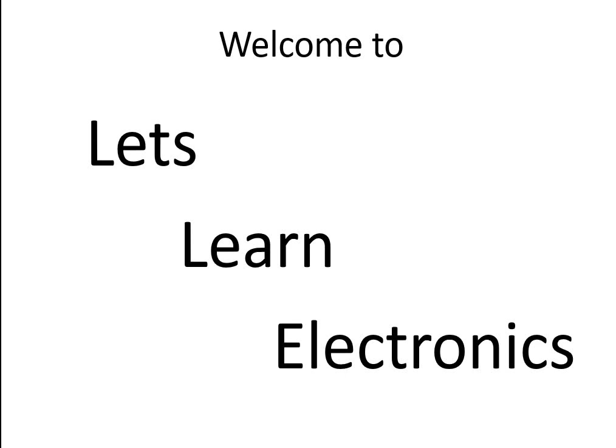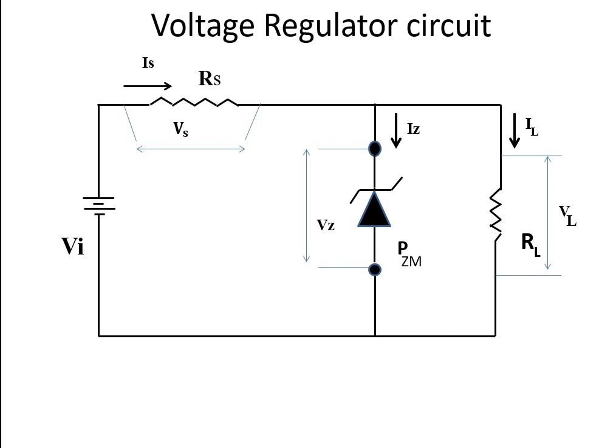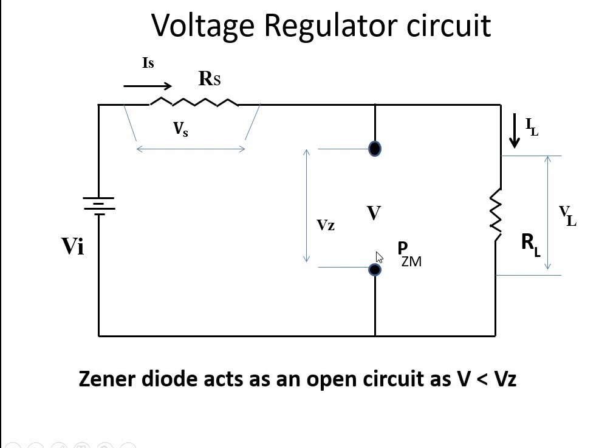Hello and welcome to the channel Let's Learn Electronics. Let's have a quick recap of the last video. We studied this Zener regulator circuit. Zener diode is the hero of this entire unit. As long as Vi is stable and RL is fixed, it behaves like an open circuit.